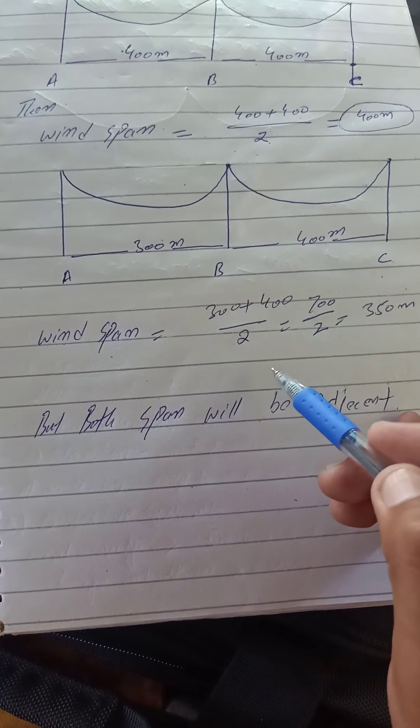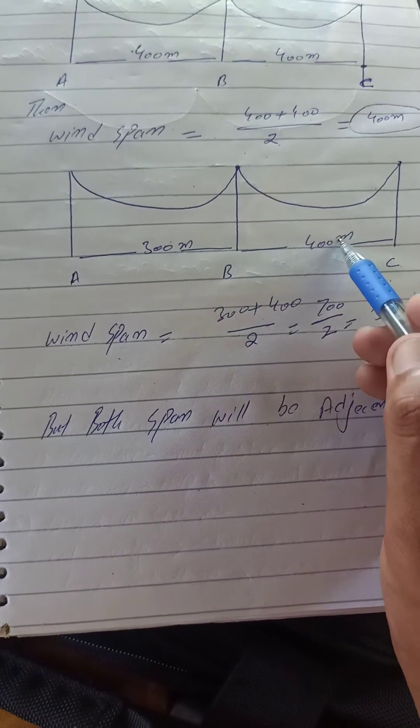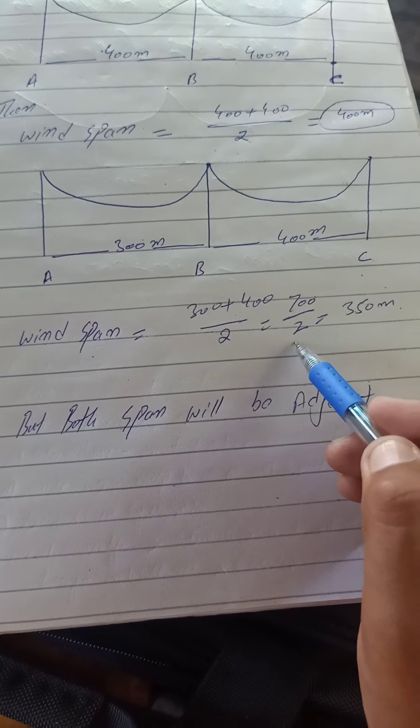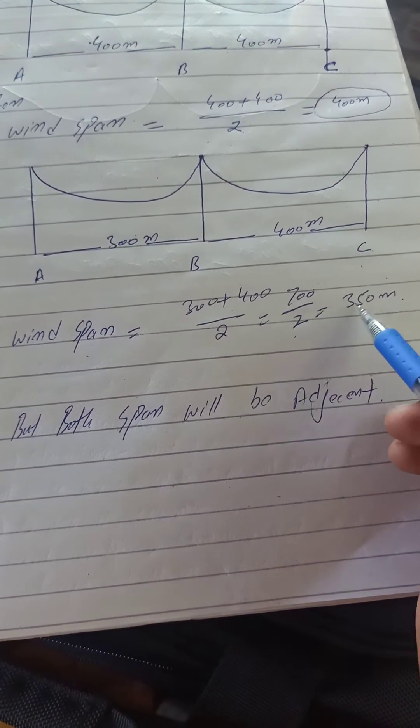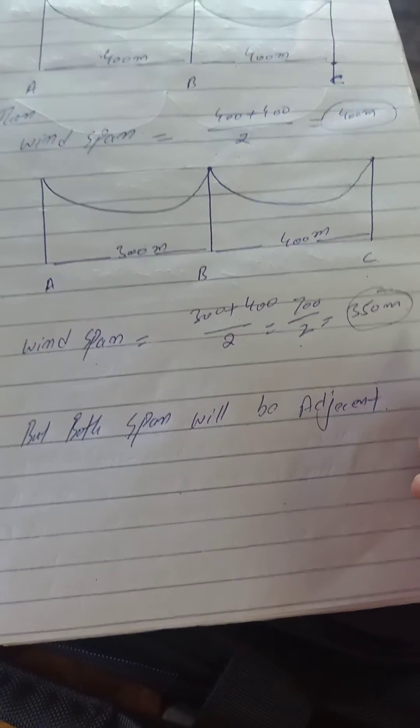So 300 plus 400 will be equal to 700. Then we divide it by 2, it will be equal to 350 meters. So in this case, the wind span will be 350 meters.